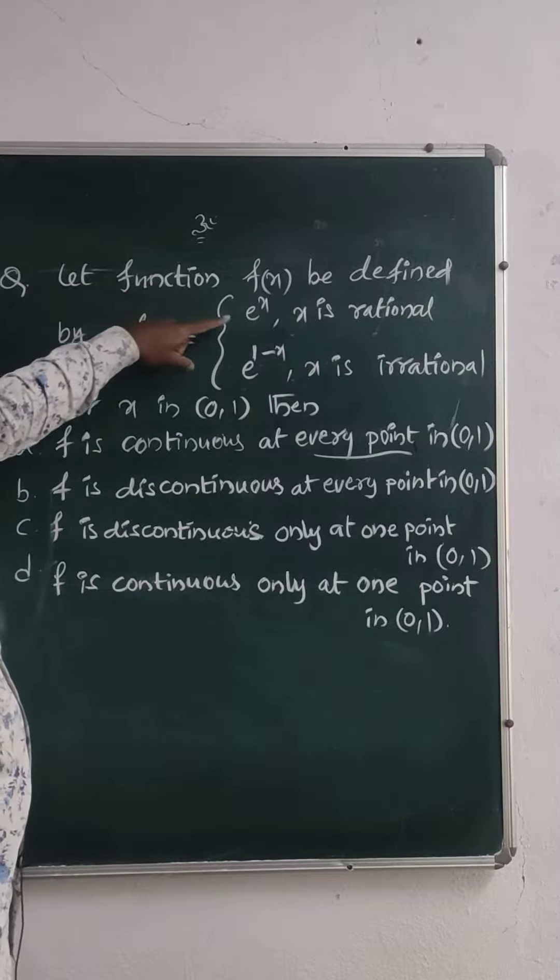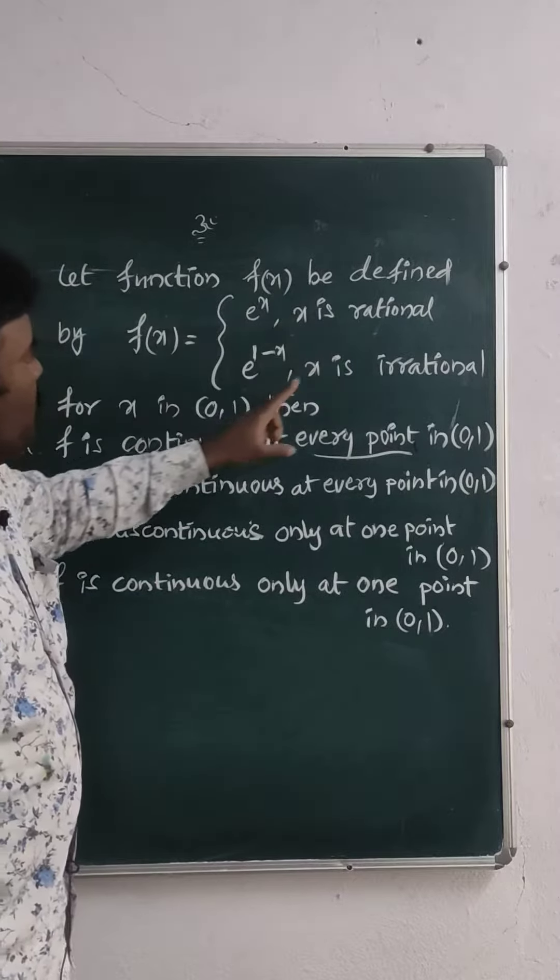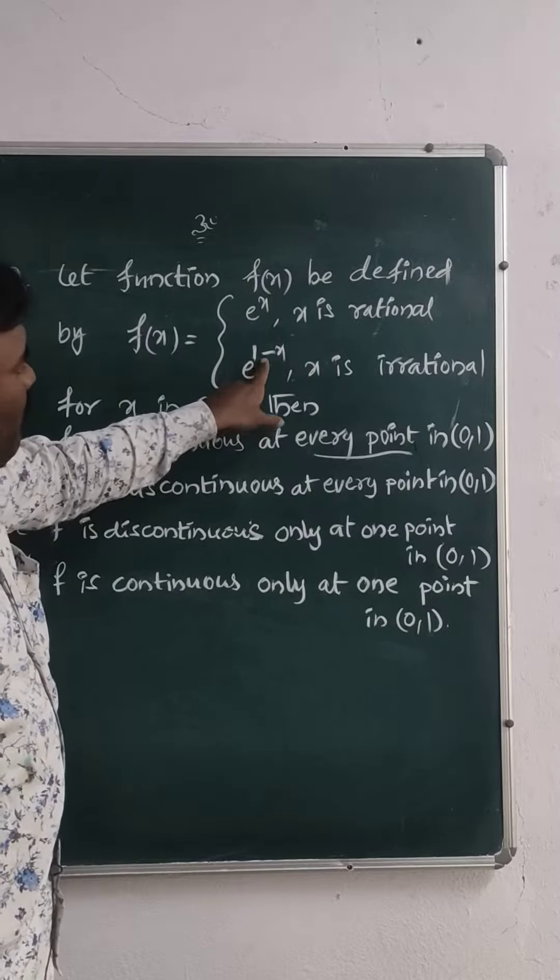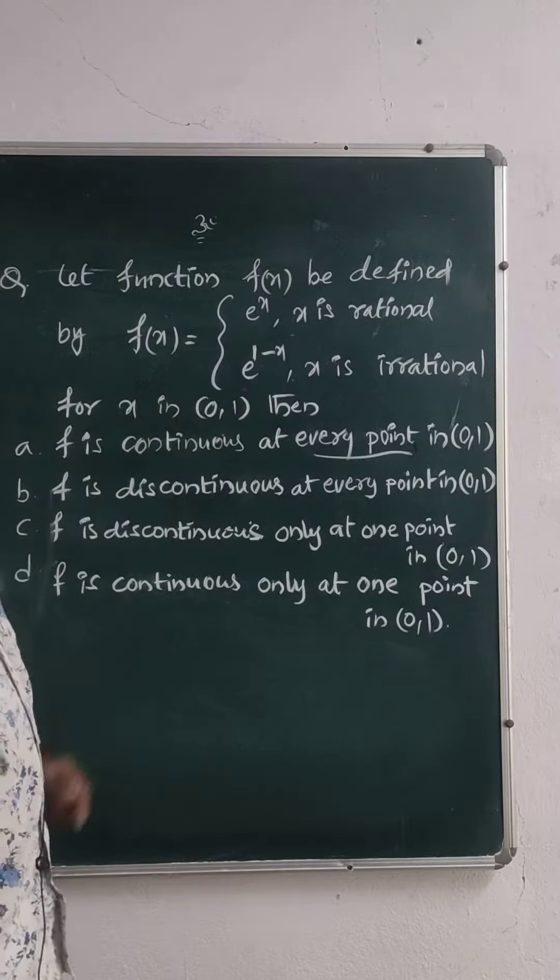Given function is f(x) equals e to the power of x for x belongs to rational numbers, and e to the power of 1 minus x for x is irrational in the interval (0,1).